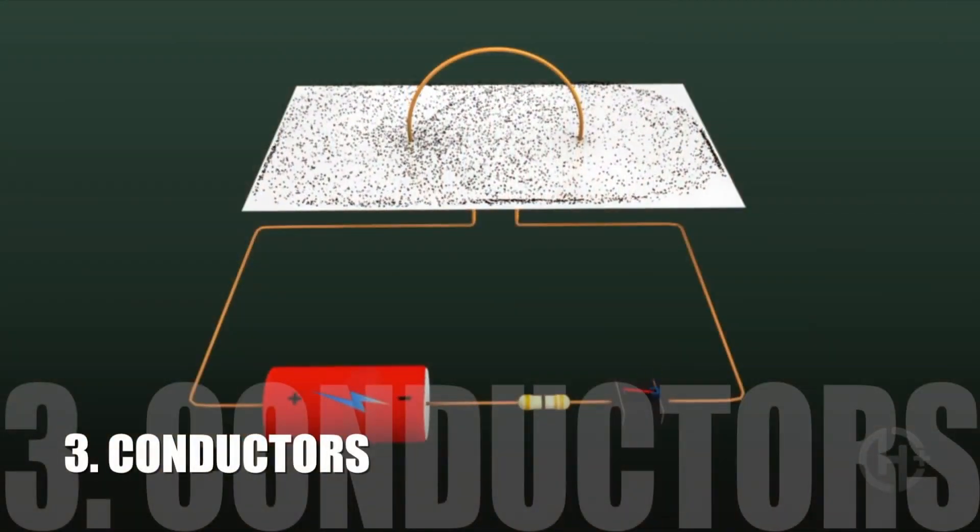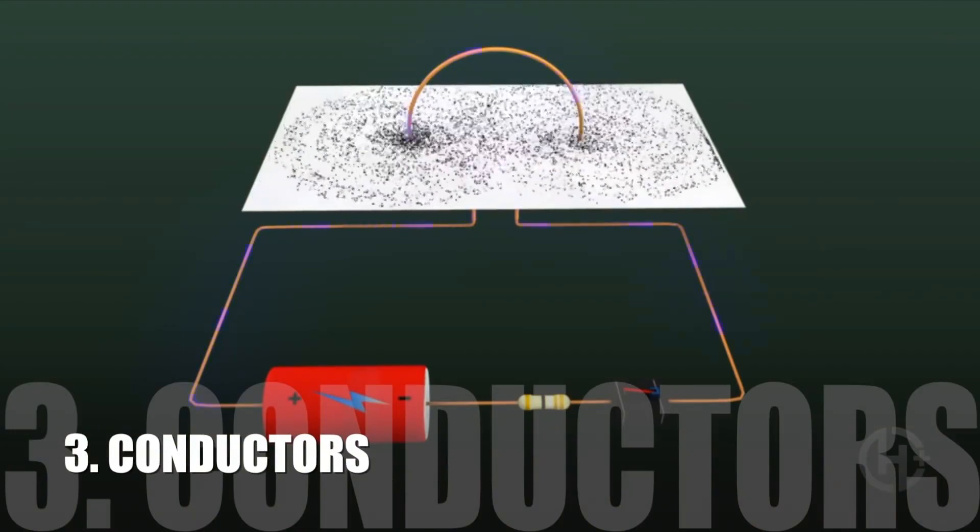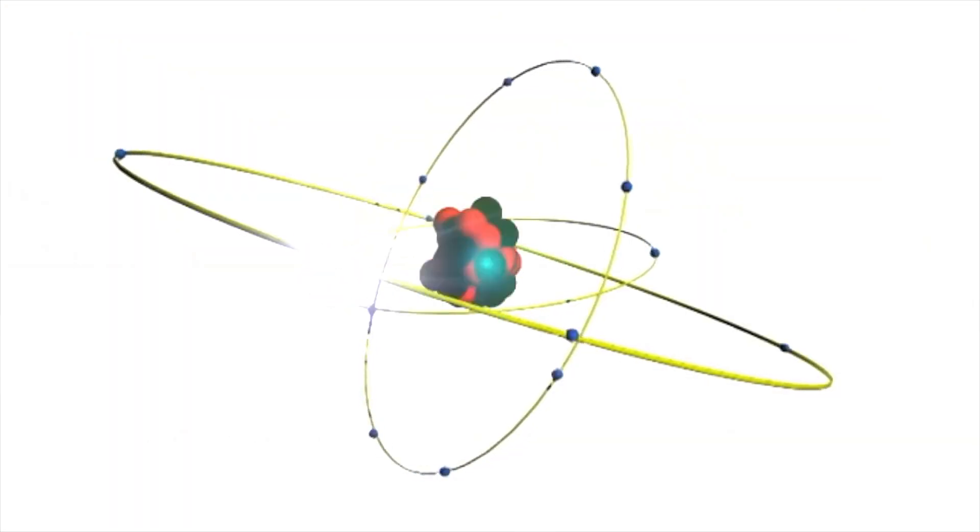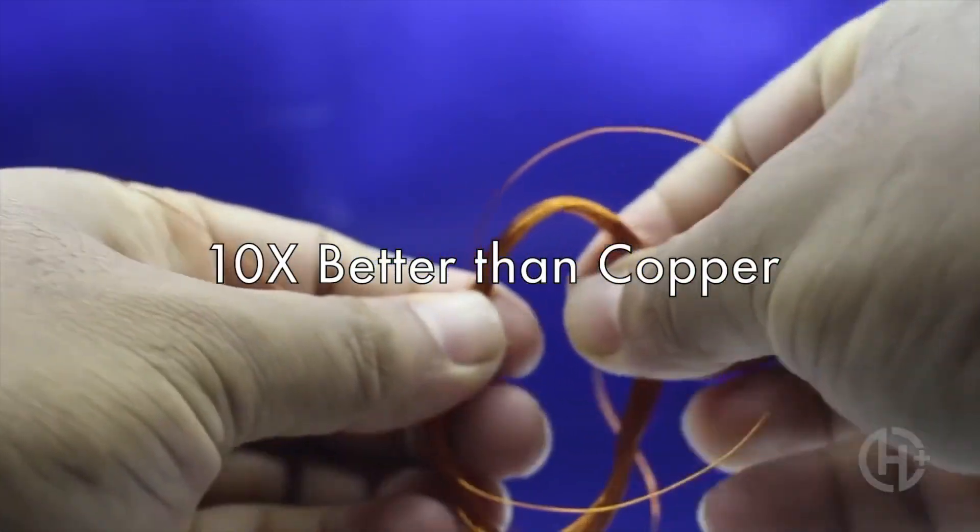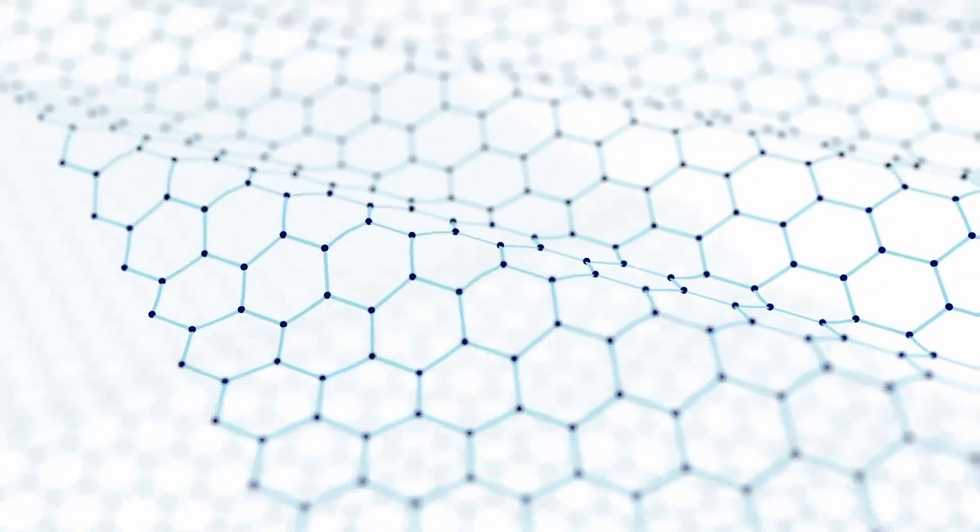Not only is graphene a strong, wearable, energy-generating material, it can also be made into a superconductor, conducting electricity 140 times faster than silicon, and conducting heat 10 times better than copper.